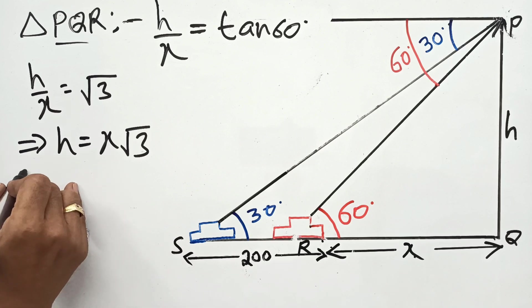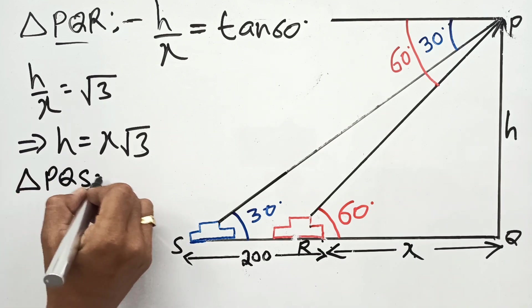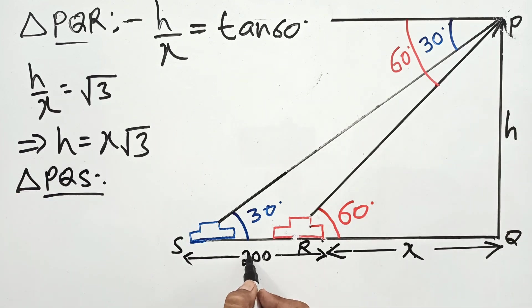Now in triangle PQS, h upon x plus 200, which is PQ upon QS, equals tan 30 degrees.